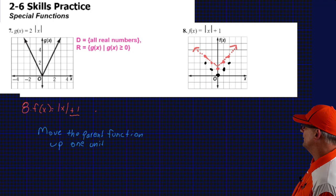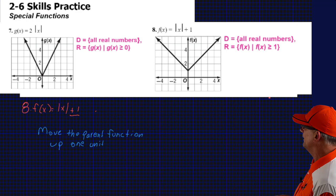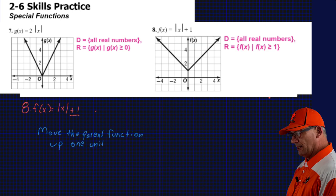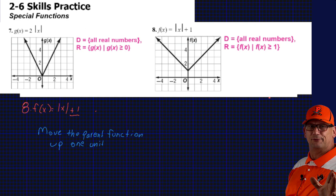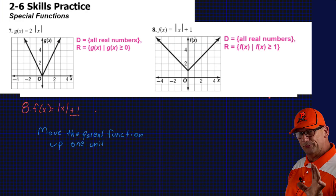Domain and range for number 8: the domain is going to be all real numbers. The range is going to be y greater than or equal to 1 because we moved it up one — the vertex is now at y = 1 instead of 0. That's what the graph looks like nicely graphed. If you know the parent functions, all you have to do is make adjustments based on where the values are — you don't need a table of values every time.